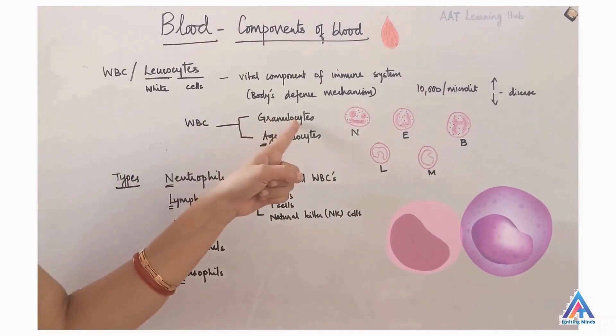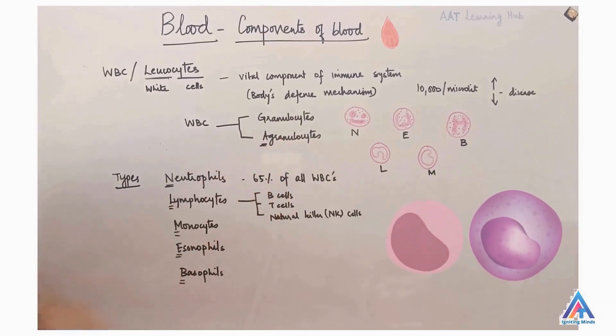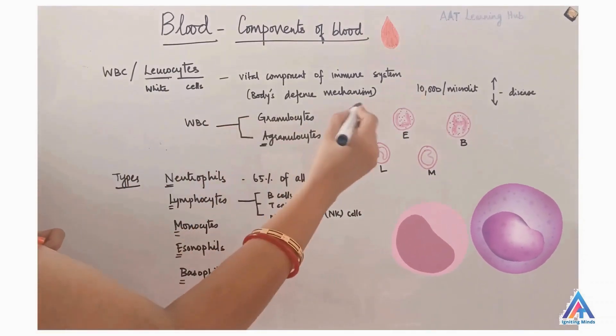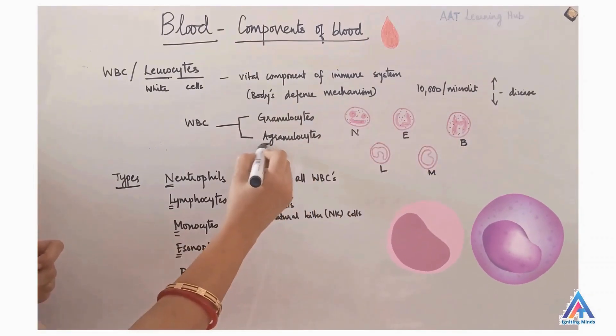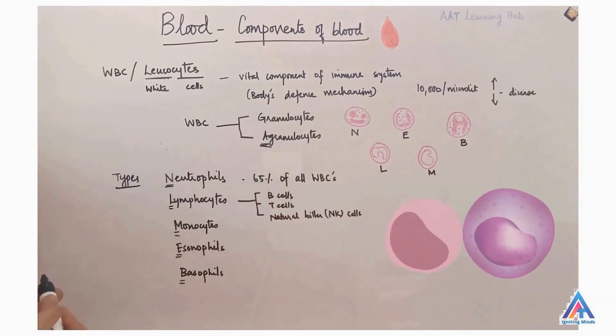So, WBCs are either granulocytes or agranulocytes and as the name suggests, granulocytes contains granules whereas agranulocytes lack any granules. What are the types of WBCs?